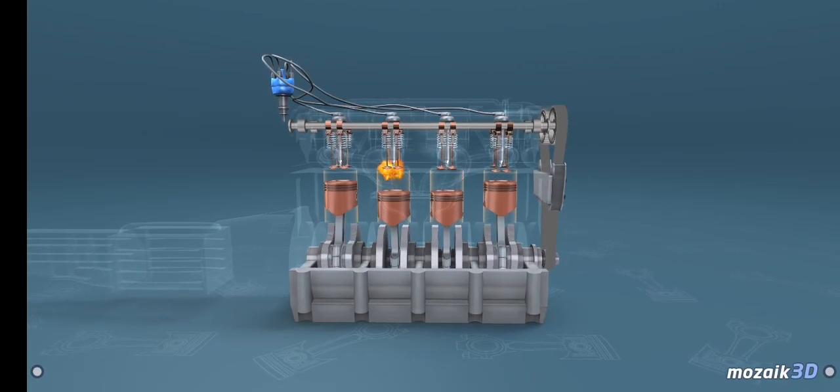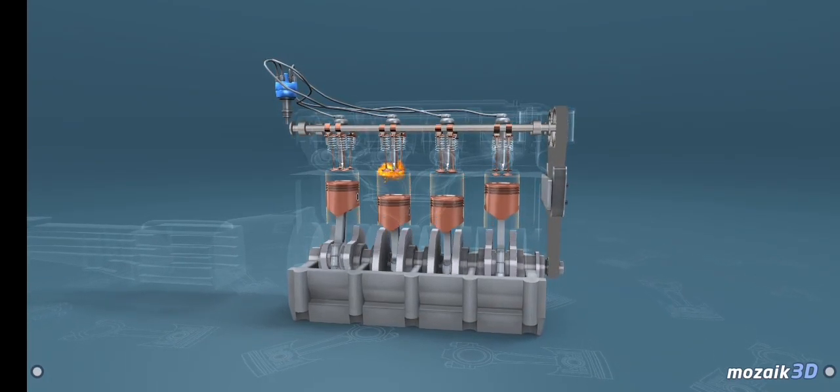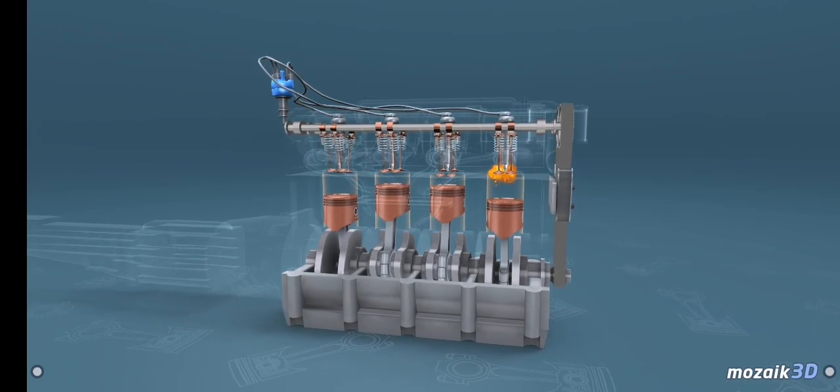The energy necessary to move the piston is provided by the combustion of fuel. The fuel used in the four-stroke auto engine is petrol.